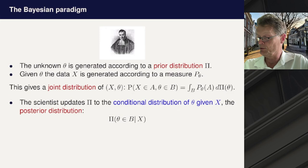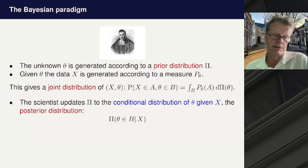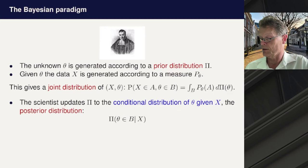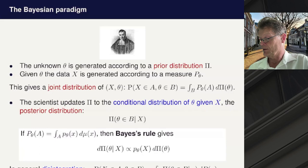In Bayesian statistics, we think of the parameter as having been generated from a prior distribution. We know the prior pi, and then you get data that, given the parameter, comes from a likelihood or measure p_theta. You get a joint distribution for the data and the parameter. The statistical inference is to get the conditional distribution of theta given the data x, and that's called the posterior distribution. If the model has a likelihood, then there is Bayes' rule, and that's where the Bayesian statistics name comes from.